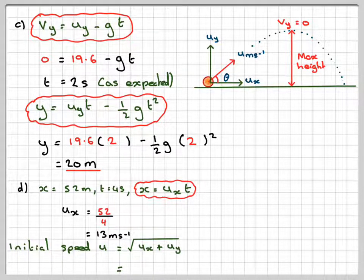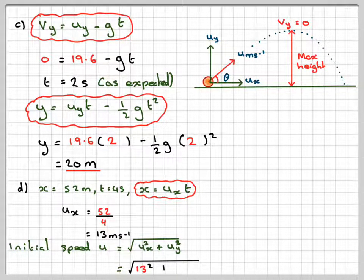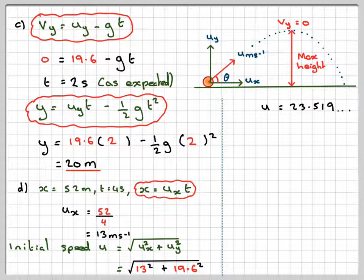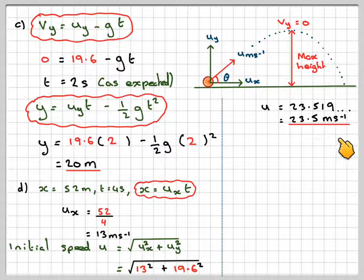Slight mistake there. It should be ux squared and uy squared. So that will be square root of 13 squared plus 19.6 squared, which gives me an initial speed of 23.51, which is 23.5 metres per second.